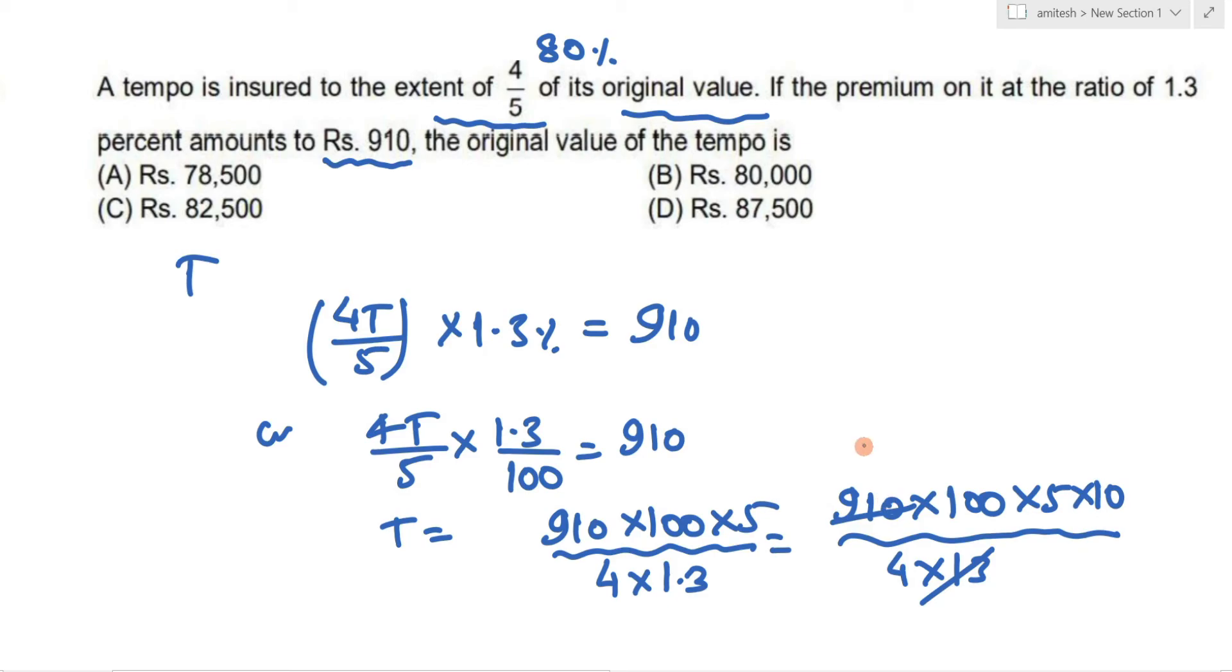13 goes into this, 4 goes into this giving 25. From here you can write 70 times 10 is 700, and 25 times 5 is 125. Taking 100 out, 125 multiplied by 7 gives what value? 875 and then 100, so our answer is what? Option number D.